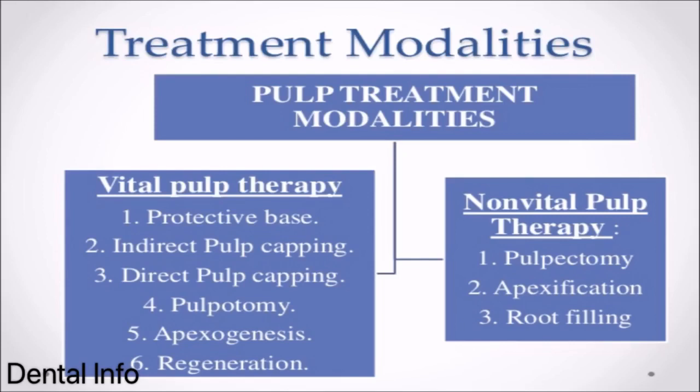Treatment Modalities. Vital pulp therapy includes: 1. Protective base, 2. Indirect pulp capping, 3. Direct pulp capping, 4. Pulpotomy, 5. Apexogenesis, 6. Regeneration. Non-vital pulp therapy includes: 1. Pulpectomy, 2. Apexification, 3. Root filling.